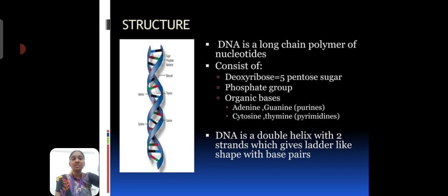The organic bases classified into two major groups. First one is purine. Purine have two bases, adenine and guanine. Pyrimidine also having two bases, cytosine and thymine. The DNA is double helix with two strands. It keeps the ladder like shape with base pairs.